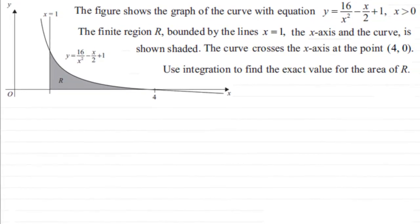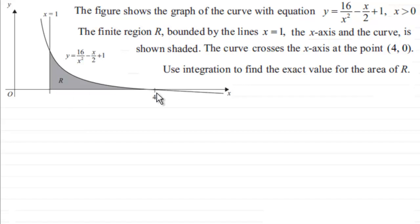Hi. Now in this part of the question we're given the curve y equals 16 over x squared minus x over 2 plus 1, where x is greater than 0. We've got this region R trapped between the lines x equals 1, the x-axis, and where it crosses the x-axis at the point (4, 0), and we've got to use integration to find the exact value for the area of R.